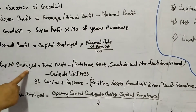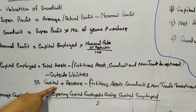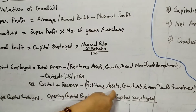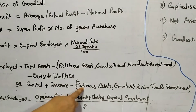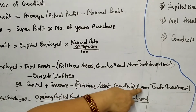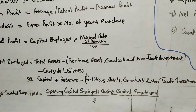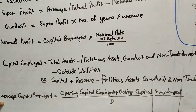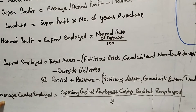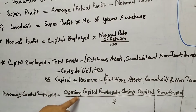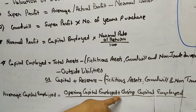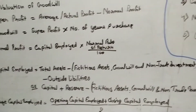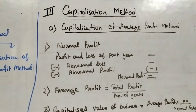The second way is: capital employed equals capital plus reserves minus fictitious assets, goodwill, and non-trade investment. The third way is to calculate capital employed on the basis of average capital employed, that is, opening capital employed plus closing capital employed divided by two.